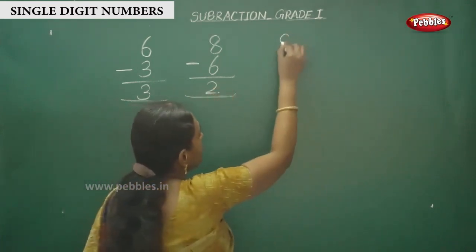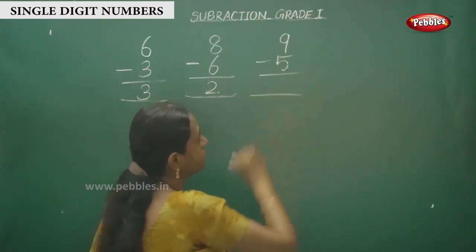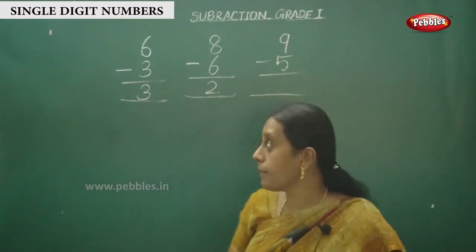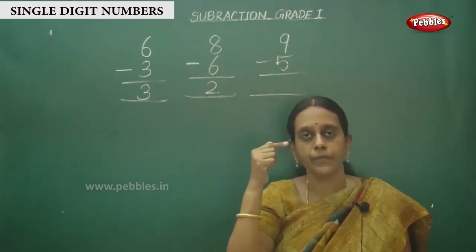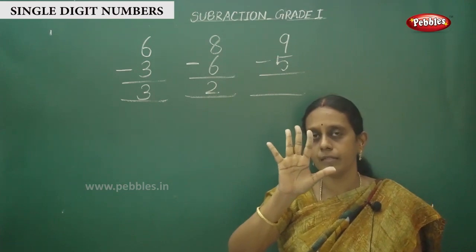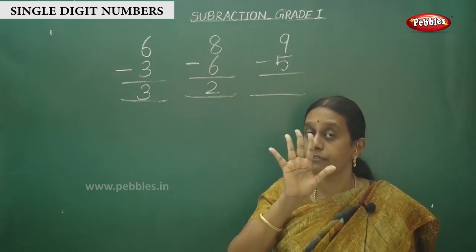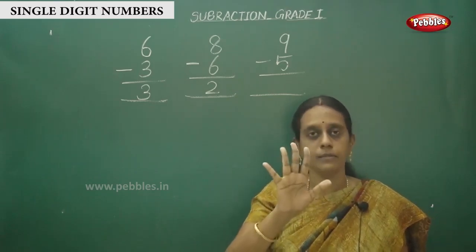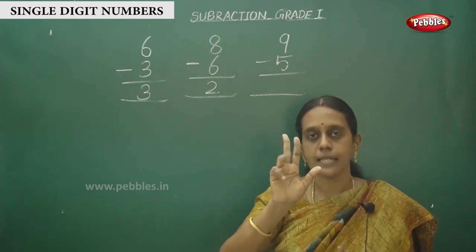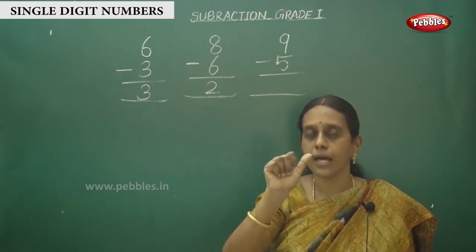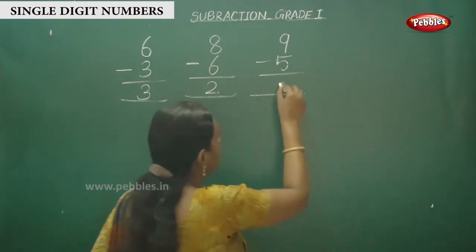One more sum: 9 in the mind, 5 on the fingers. Before 9 is 8, then 7, 6, 5, 4. So the answer is 4.